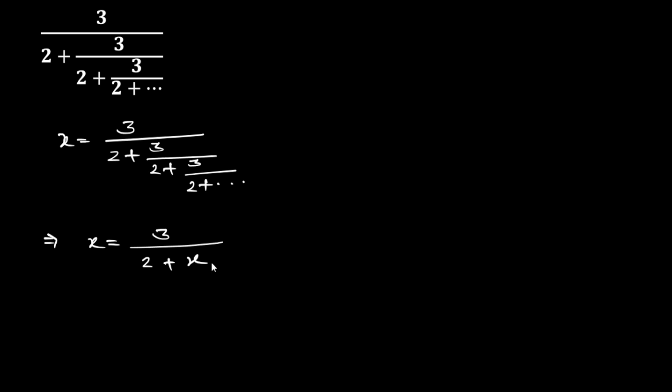Now we get X squared plus 2X minus 3 is equal to 0, right?